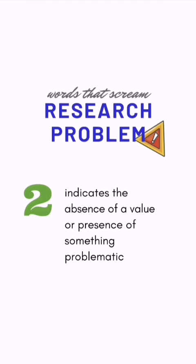The second thing that describes a research problem is that it indicates the absence of a value, such as indicators of competence in research, or the presence of something problematic, such as the presence of a broken spiral in the teaching of mathematics in junior high school.